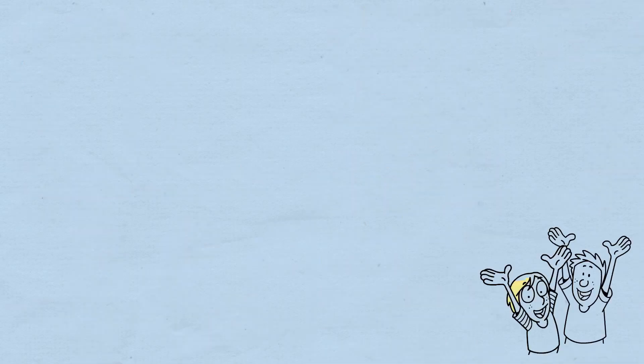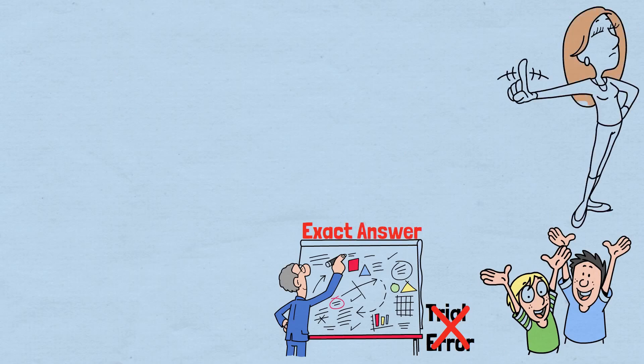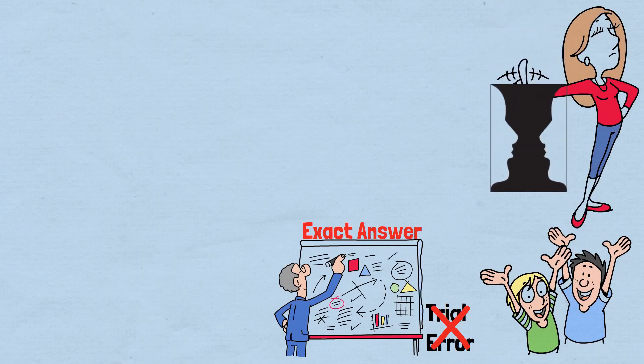Notice what just happened. We didn't guess. We didn't use trial and error. We followed a systematic process that gave us the exact answer through logical deduction. This isn't luck. It's mathematical certainty. But the method becomes even more interesting when we encounter ambiguous cases.